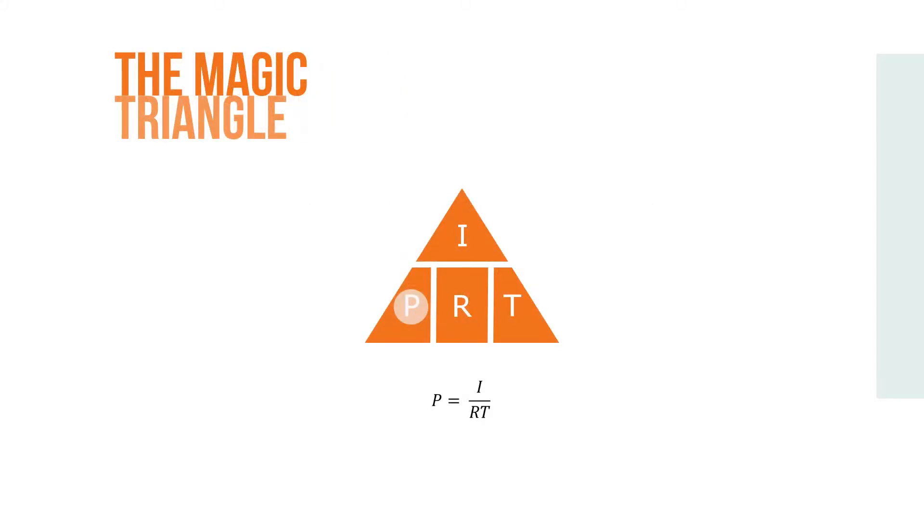We can also find the formula in the magic triangle by covering the unknown variable P as follows: P equals I over RT.